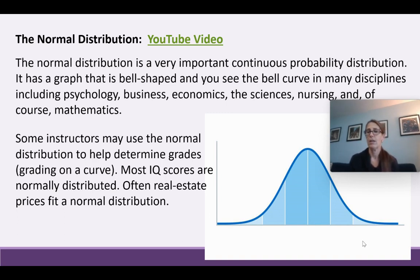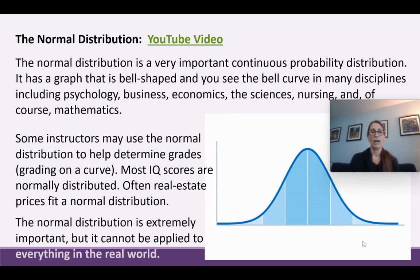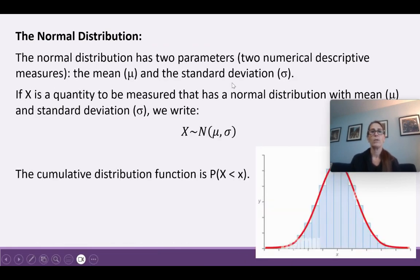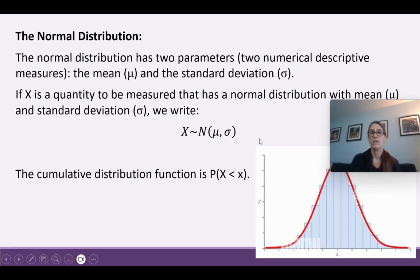It's really important, but it doesn't fit everything in the real world. We'll see situations where it doesn't fit, but we can still use it sometimes even when something isn't normally distributed — we'll find out more in chapter 7. The normal distribution has two parameters: the mean mu and the standard deviation sigma. If x has a normal distribution with mean mu and standard deviation sigma, we write x ~ N(mu, sigma).